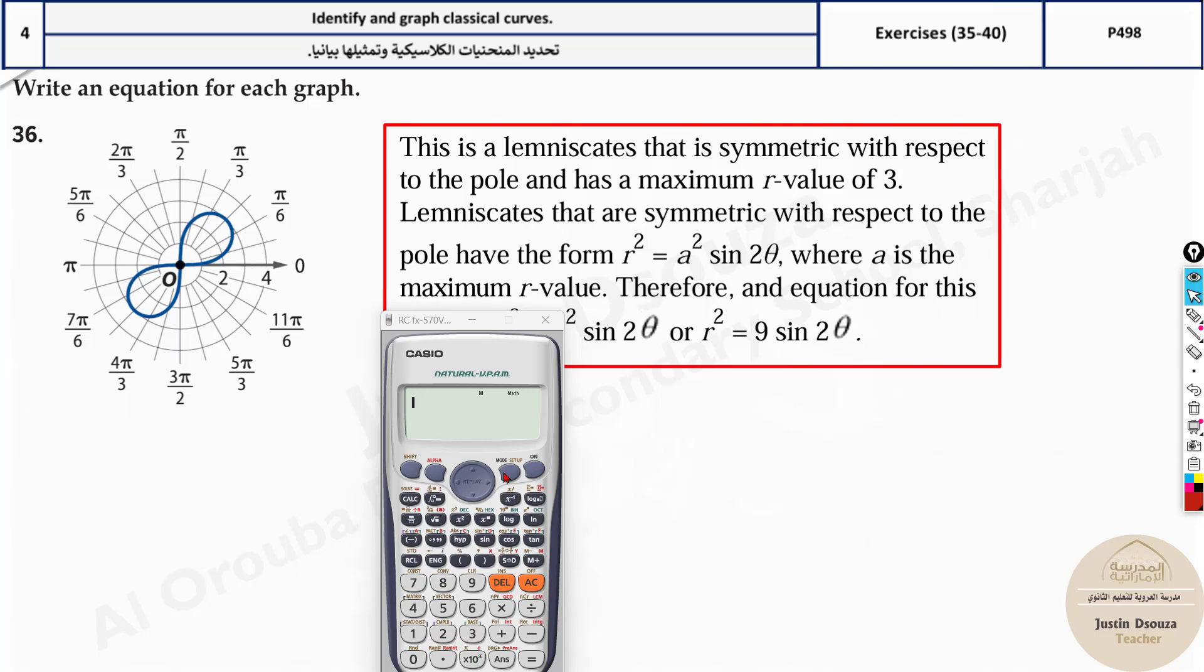So what you do is mode 7, write this form. Now over here when you write the form, there's a very important thing. You can't write directly 9 sine 2 theta. No, you should write square root because we have to take square root on both sides to get r. This is square root of 9 sine 2 theta, which is basically alpha x. Close the bracket. There's no g of x.